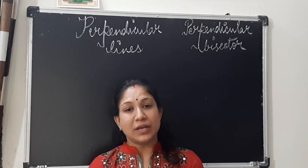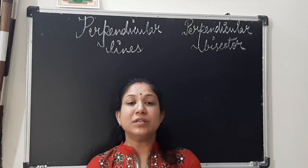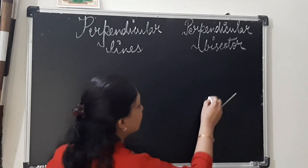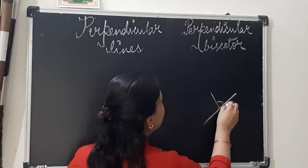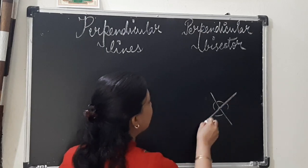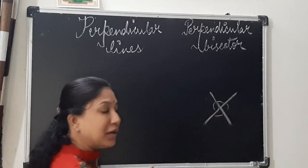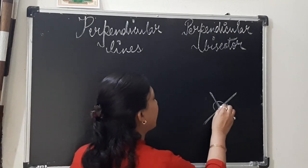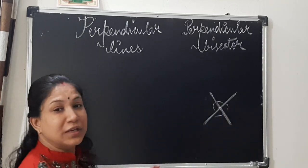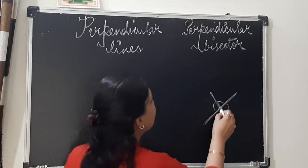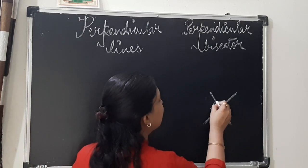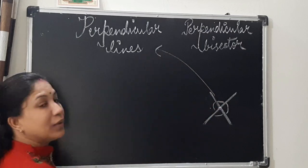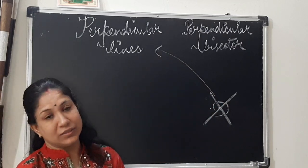We know that when two lines cross each other or meet each other at a point, angles are formed and this pair of lines are called intersecting lines. Through this point of intersection, you can see angles are formed. Now, let us relate this with perpendicular lines.